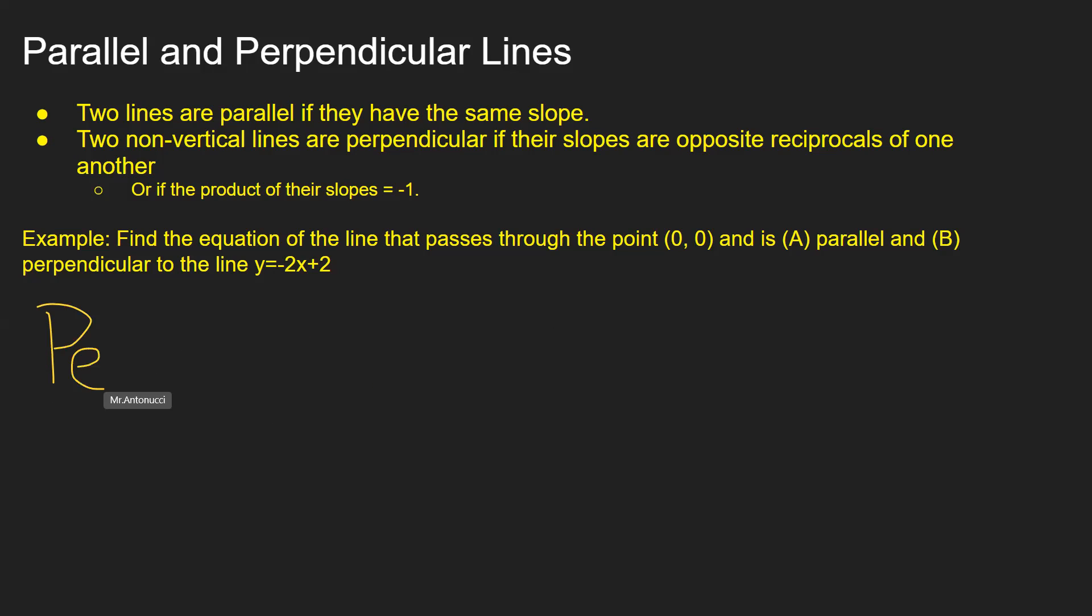The perpendicular line will have a slope that's the opposite reciprocal of -2. The reciprocal of -2 is -1/2, and the opposite of that is positive 1/2. We know the point is (0, 0).